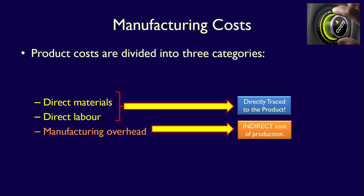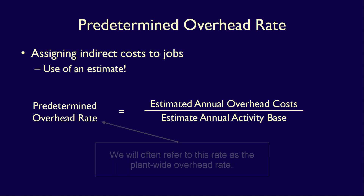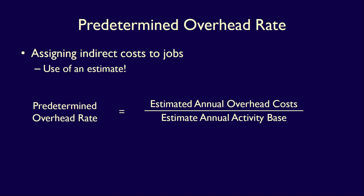However, overhead costs are indirect costs of the manufacturing process. In order to apply manufacturing overhead to the cost of a product, we use the predetermined overhead rate, calculated at the start of the year. The predetermined overhead rate, also called a single rate or plant-wide overhead rate, is calculated as the estimated annual overhead costs divided by the estimated annual activity base.